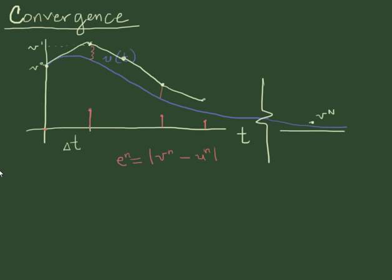So let's say it's en. And this is the absolute value of the difference between our numerical solution and the exact solution at that time point. So absolute value of vn minus un. And we're going to have this for n equals 0, 1, all the way up to capital N.